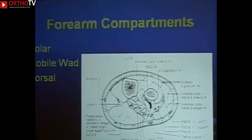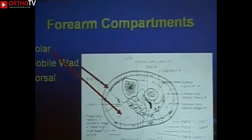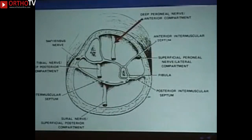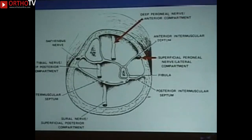In the forearm, we have three compartments: the volar compartment, the mobile wad, and the dorsal compartment. In the leg, we have four compartments: the anterior compartment with its deep peroneal nerve, the lateral compartment with the superficial peroneal nerve lying right on the septum between anterior and lateral, the sural nerve in the superficial posterior compartment, and the tibial nerve in the deep posterior compartment.